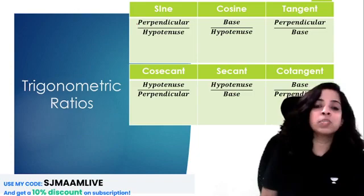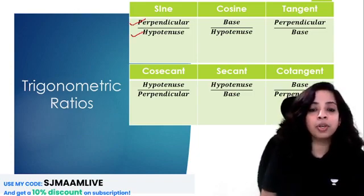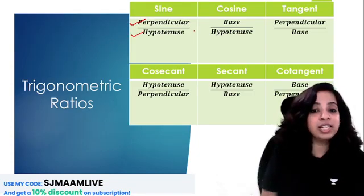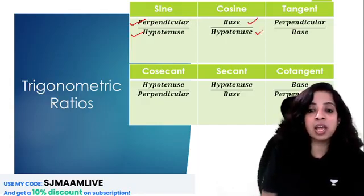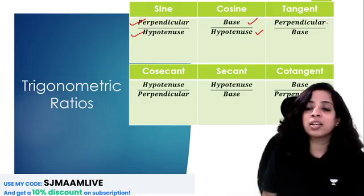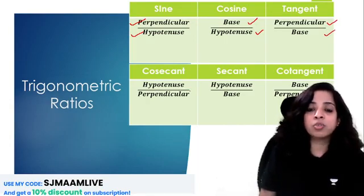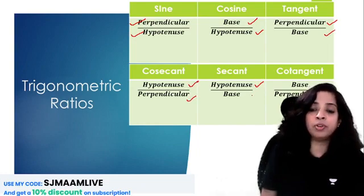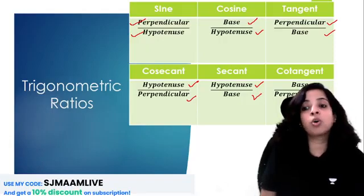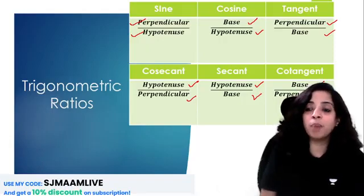Sine is perpendicular divided by hypotenuse. Cosine is the ratio of base and hypotenuse. Tan is the ratio of perpendicular and base. Similarly, cosec is the ratio of hypotenuse and perpendicular. Sec is the ratio of hypotenuse by base, and cot is the ratio of base and perpendicular.